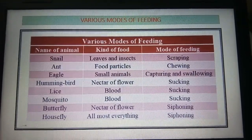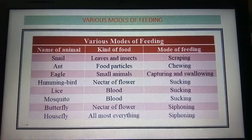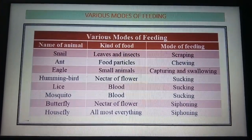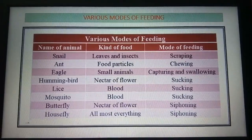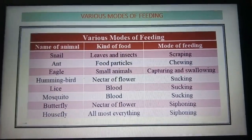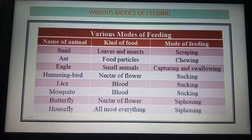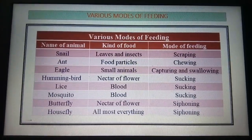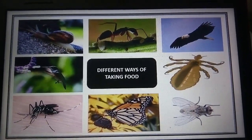You can do this activity in your copy. The activity covers various modes of feeding by different animals, listing the name of the animal, the kind of food they eat, and the mode of feeding. Snail feeds on leaves and insects by scraping. Ant feeds on food particles by chewing. Eagle feeds on small animals by capturing and swallowing. Hummingbird feeds on nectar of flowers by sucking. Lice and mosquitoes feed on blood by sucking. Butterfly feeds on nectar of flowers by siphoning. Housefly eats almost everything, also by siphoning.